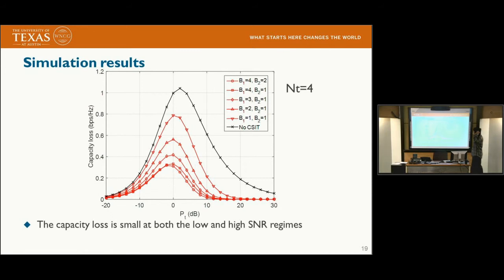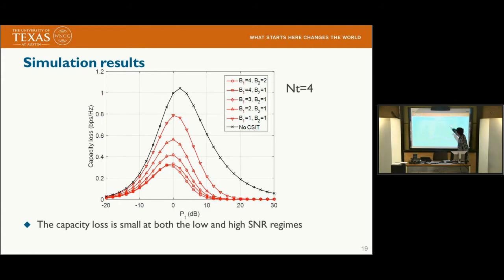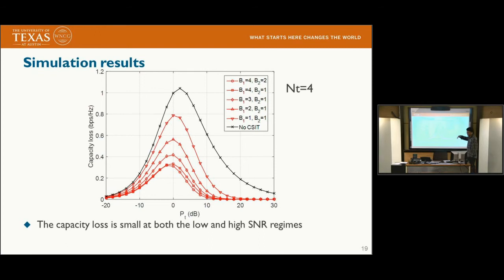The capacity loss results show that as the number of bits increases, the capacity loss decreases. The capacity loss is not a monotonic function of power: at low SNR, both capacity and capacity loss are very small, and at high SNR, the capacity saturates, so the capacity loss is also small in that region.